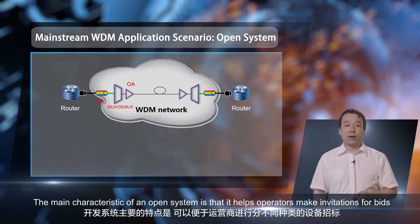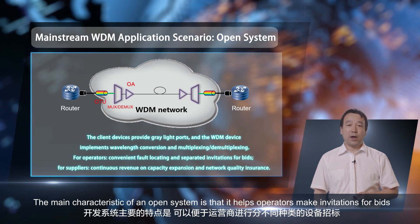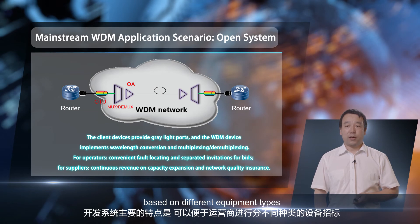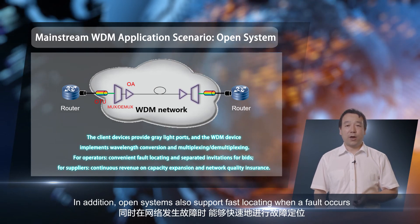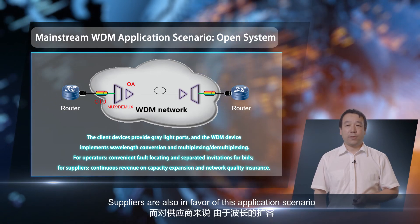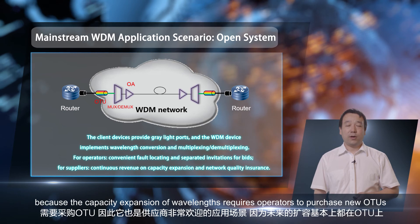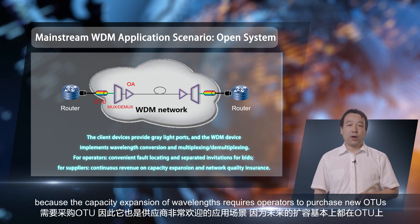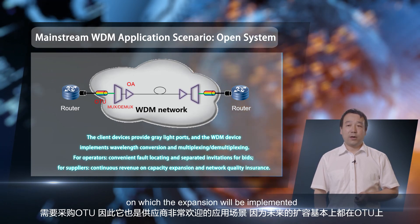The main characteristic of an open system is that it helps operators make invitations for bids based on different equipment types. In addition, open systems also support fast fault locating. Suppliers are also in favor of this application scenario because capacity expansion of wavelengths requires operators to purchase new OTUs on which the expansion will be implemented.